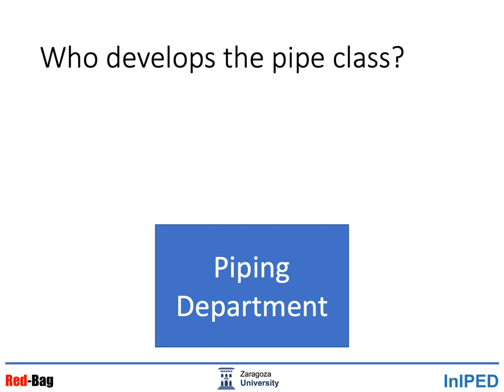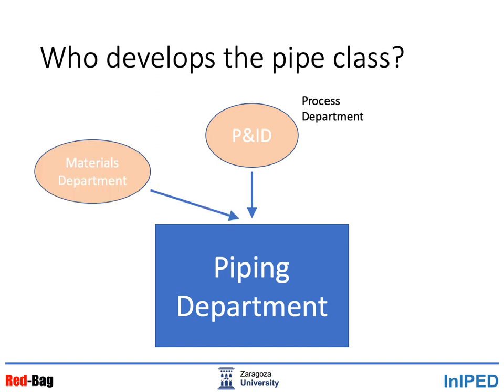The question now is: who develops the pipe class? The answer is the piping department. The starting document for this development is the P&ID — the piping and instrumentation diagram — which is created by the process department. Of course, the piping material team leans on the materials department, because they are the material experts, and also on the know-how of the company from all previous projects.